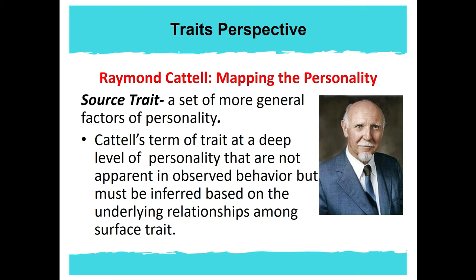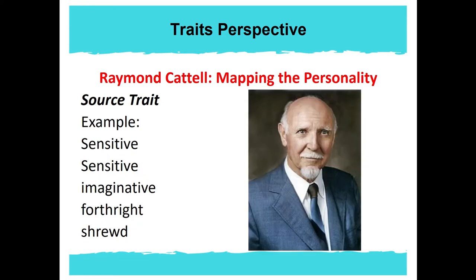Next is the source trait. A source trait is a set of more general factors of personality — Cattell's term for traits at a deep level of personality that are not apparent in observed behavior but must be inferred based on the underlying relationships among surface traits. Examples of source traits include sensitivity, imaginative, forthright, straightforward, and shrewd.